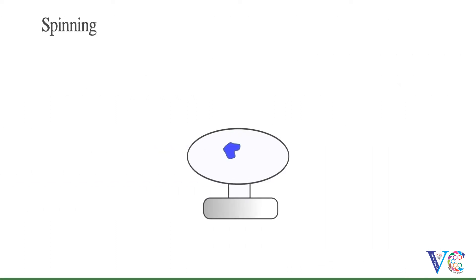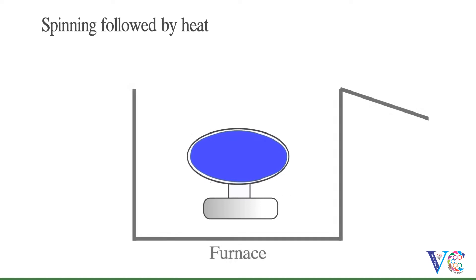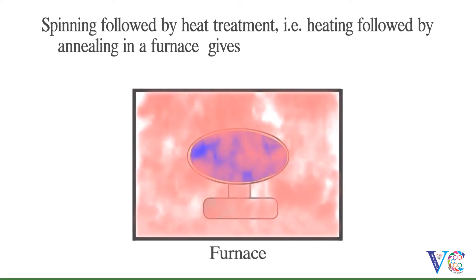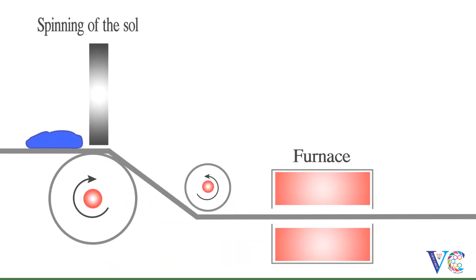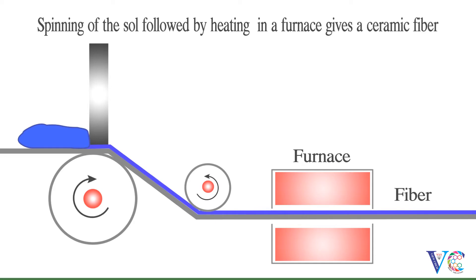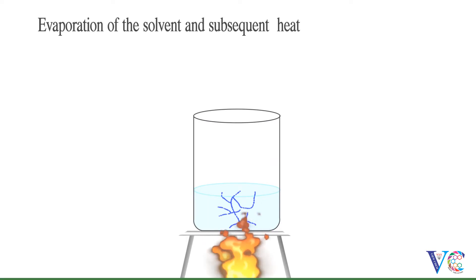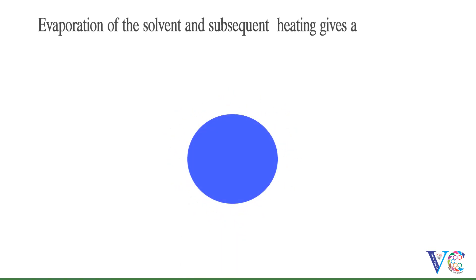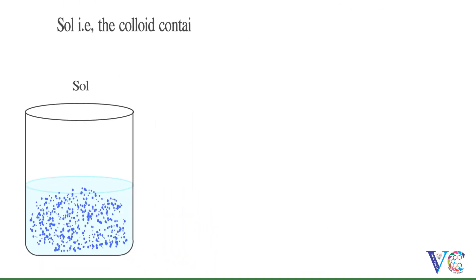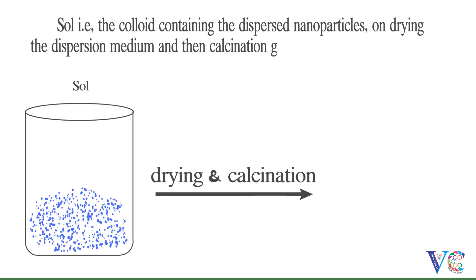Spinning followed by heat treatment — that is, heating followed by annealing in a furnace — gives a thin film of nanoparticles. Spinning of the sol followed by heating in a furnace gives a ceramic fiber. Evaporation of the solvent and subsequent heating gives a dense particle. The sol, containing the dispersed nanoparticles, on drying the dispersion medium and then calcination, gives a powder of nanoparticles.